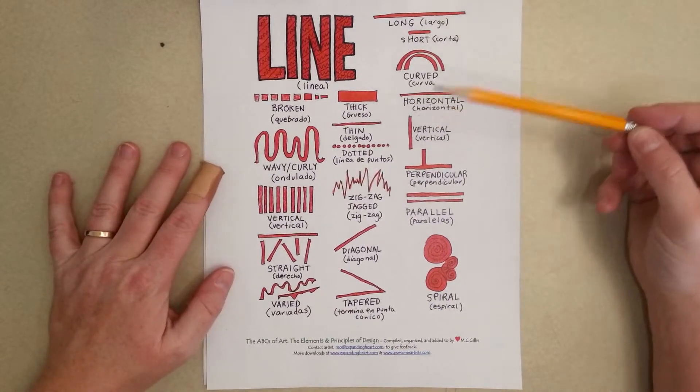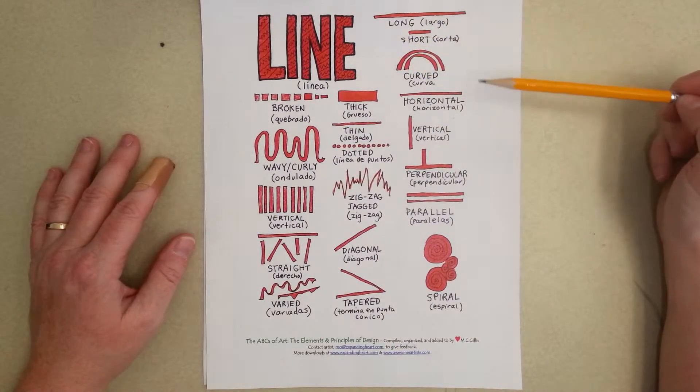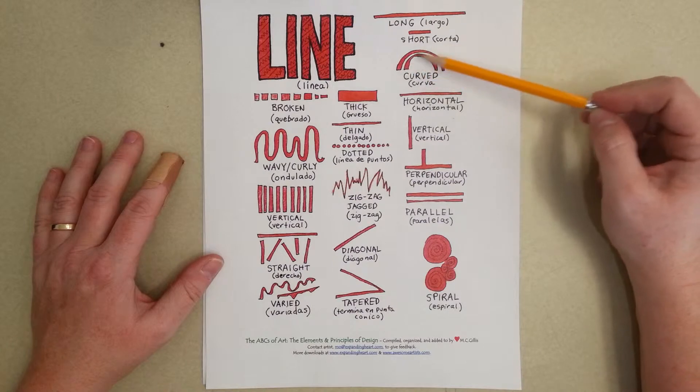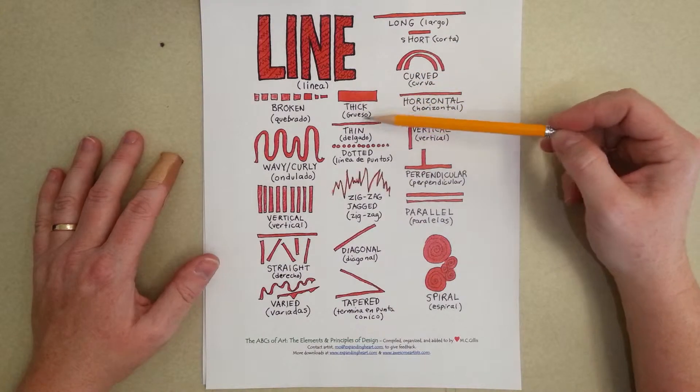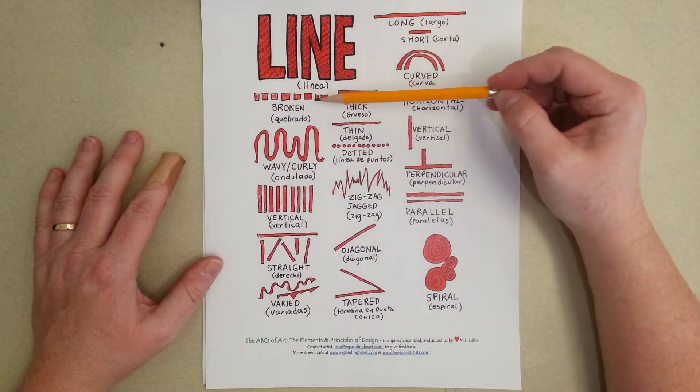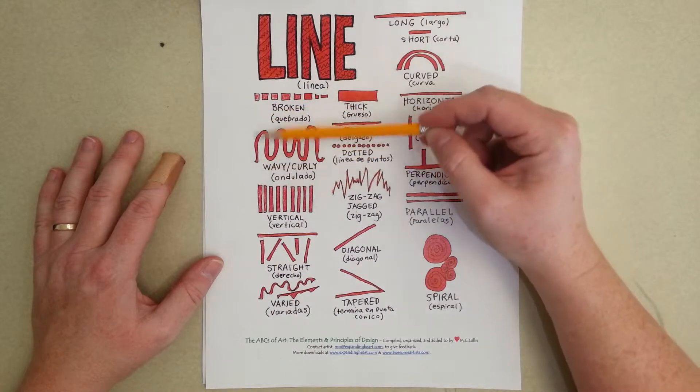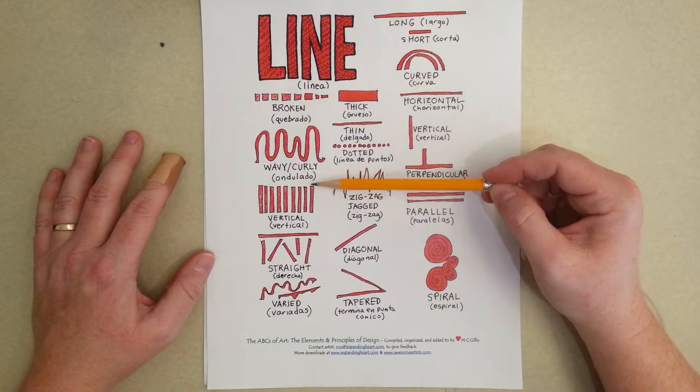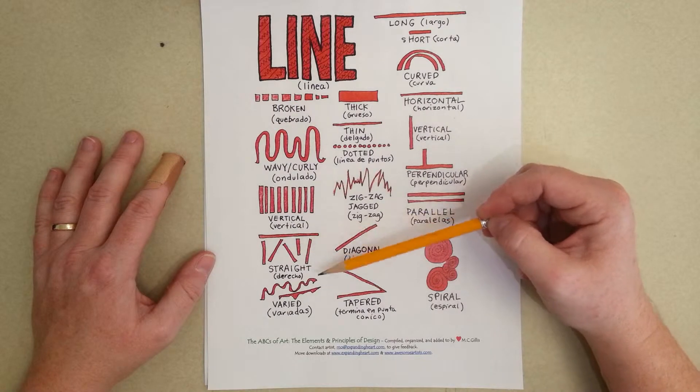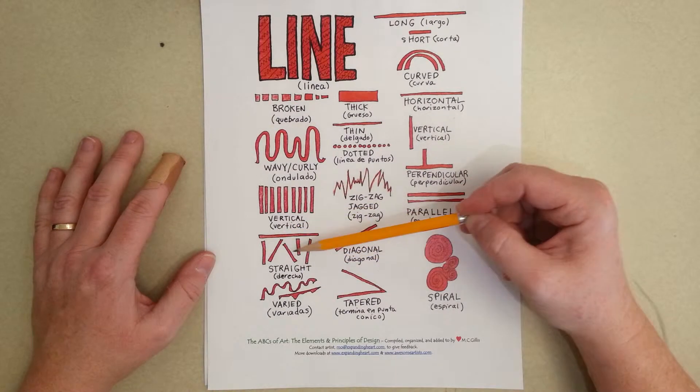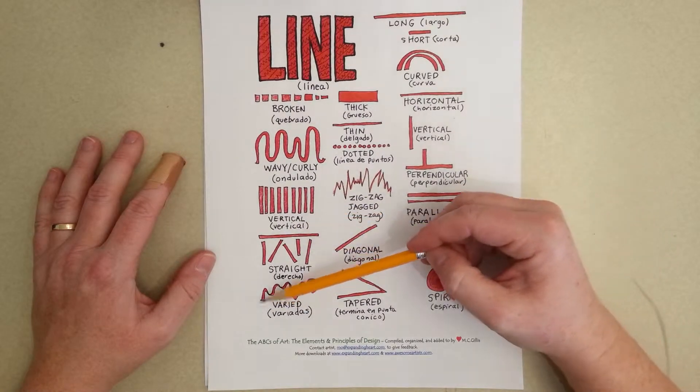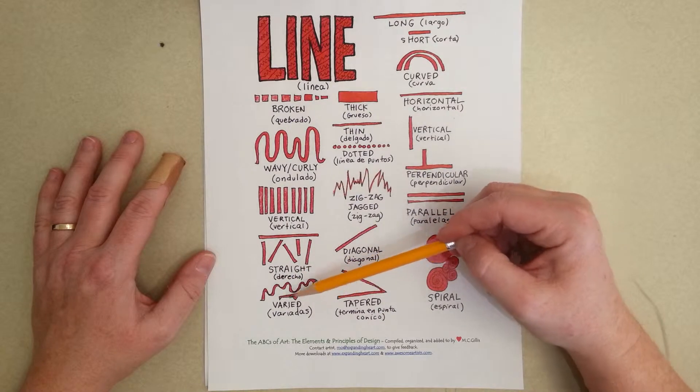As you can see, there's lots of different ways to draw a line. There's long, there's short, there's curved, there's thick, there's thin, there's broken lines, there's wavy or curly lines. You've got vertical repeating lines, angled straight lines, but they're not all lined up. Varied lines, so they're kind of irregular.